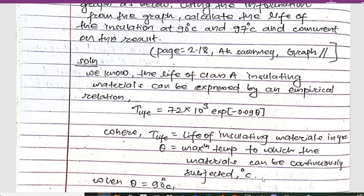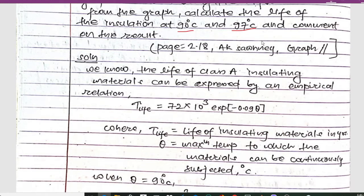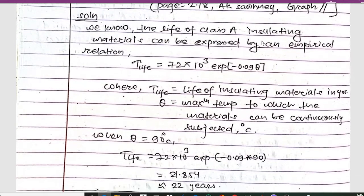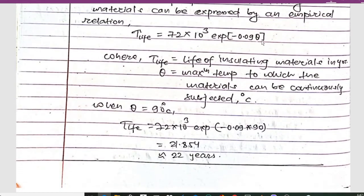We have given two temperatures at 90 degrees Celsius and 97 degrees Celsius. When the temperature is 90 degrees Celsius, T_life will be 72 × 10³ exp(-0.09 × 90).